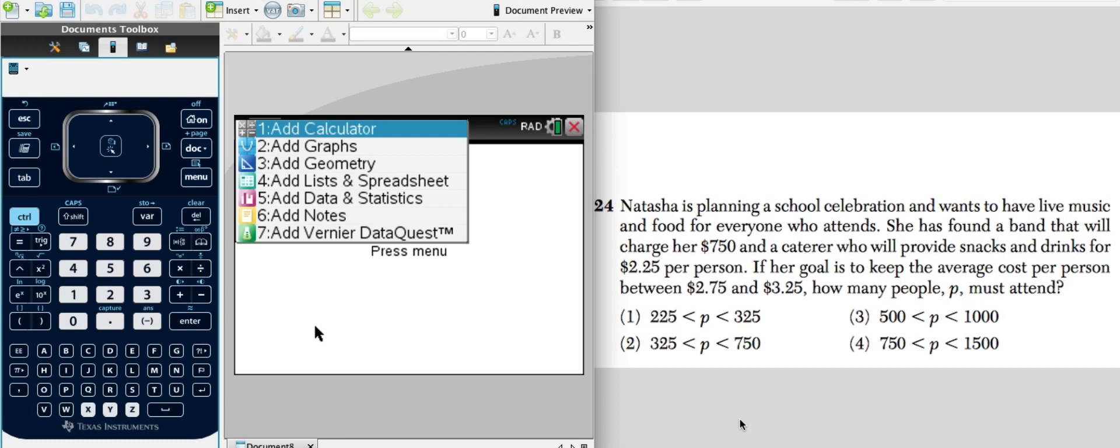So Natasha is planning a school celebration and wants to have live music and food for everyone who attends. She has found a band that will charge her $750 and a caterer who will provide snacks and drinks for $2.25 per person. If her goal is to keep the average cost per person between $2.75 and $3.25, how many people P must attend?